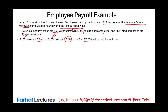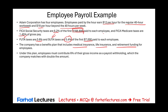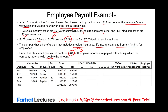The $7,000 is the limit for both FUTA and SUTA, though the SUTA limit could differ — we'll keep it at $7,000. The company also has a benefits plan including medical insurance, life insurance, and retirement funding. Employees must contribute 6% of their gross income as a payroll withholding, which the company matches at double the amount. Some companies pay all benefits, some pay nothing, some split 50-50 — this one doubles whatever the employee pays. We have a payroll register to complete first, then we'll prepare the journal entries.